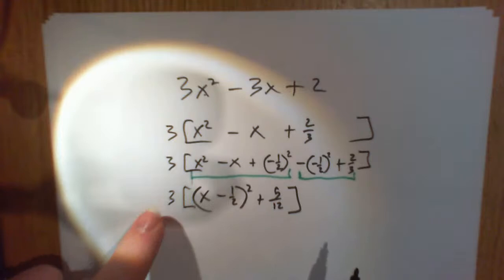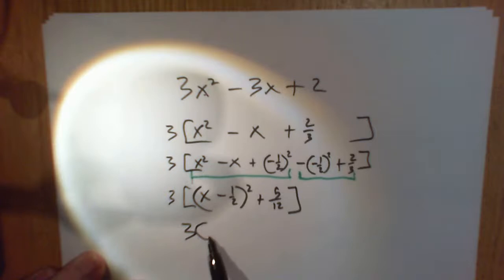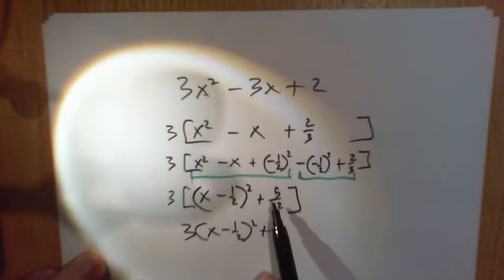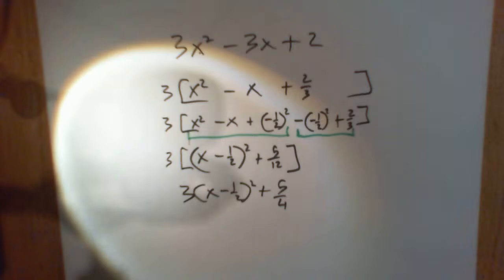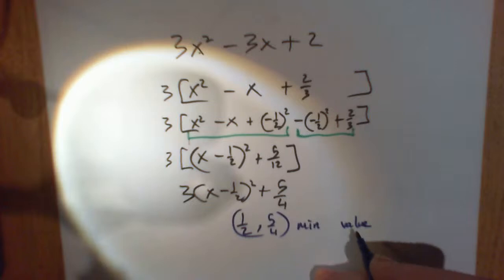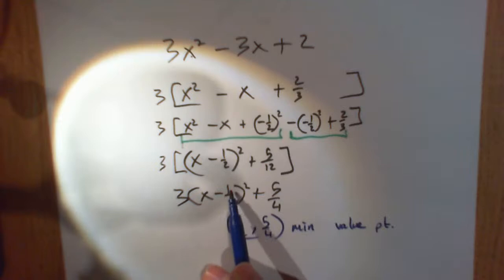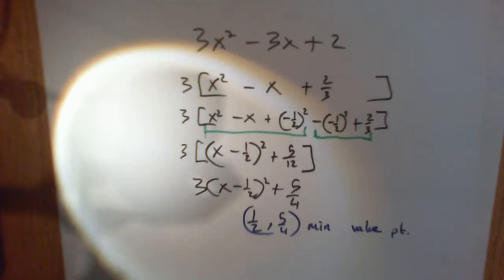Plus 5 over 12. Our final step then is multiply in the 3. So we multiply the 3 by that and then I multiply the 3 by that. That is completed. Now what can I do with this? Well, these two numbers, whatever is in there, the opposite of it. So if it's minus a half, then a half with 5 over 4 is the minimum value of that graph, the minimum point. It's the opposite of whatever that number is. If that was plus 2, it would be minus 2. It's minus a half, plus a half, with whatever that is, is your minimum point.